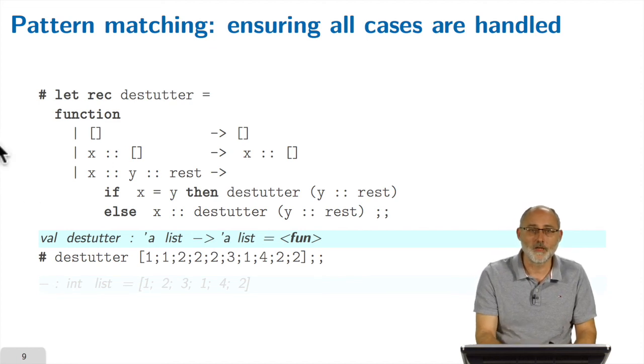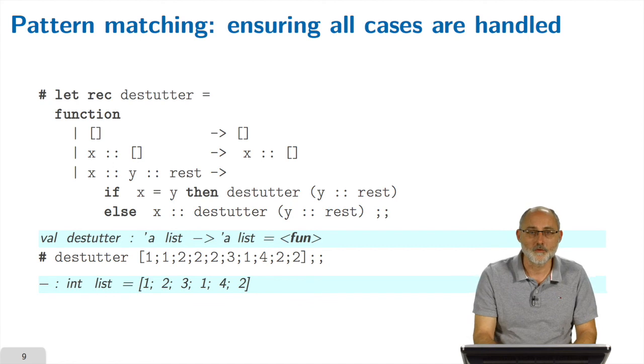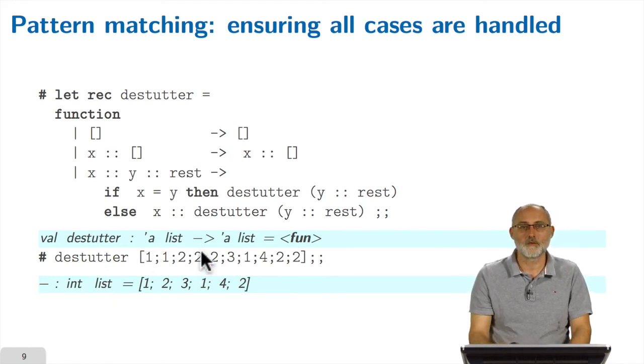So let's try to apply destutter to this list where you have many, many consecutive duplicates. Well, since I didn't make any mistake in this program, you see you have this list here where all consecutive duplicates have been collapsed into single value, and it is actually an integer list. But again, remember the type of destutter? Destutter now can be used on any data structure, not just integers. Any list of something, not just lists of integers.